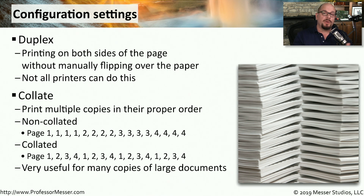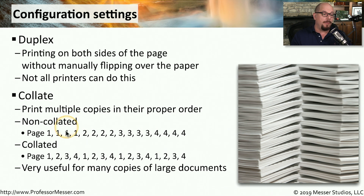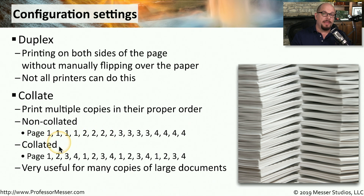If you're printing multiple copies of a job that has multiple pages, you might have the option to collate these pages on the printer. This will decide how the printer prints those pages. For example, if you're printing four copies of a four-page document and you print it non-collated, the printer will output all four copies of page one, then all four copies of page two, and so on. If you tell the printer to print in a collated form, then it will print all of the pages in order for each copy.